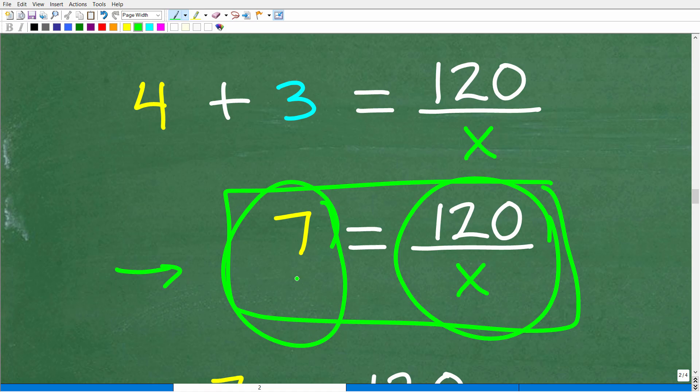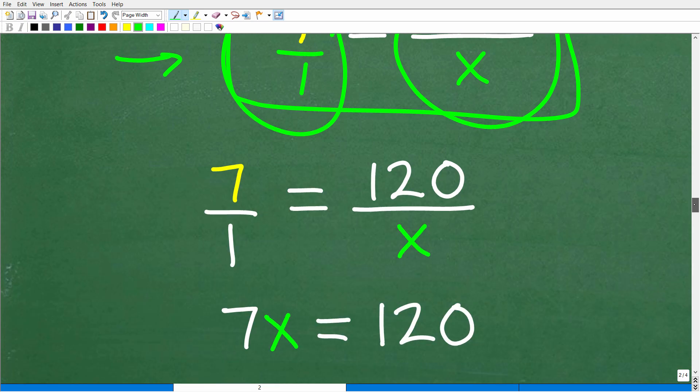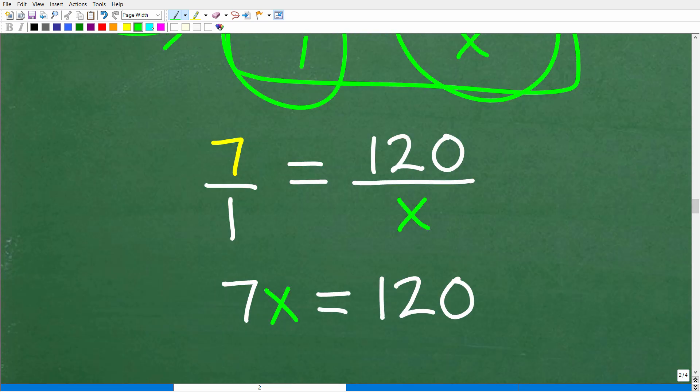Because when you have one fraction equaling to one fraction, you have what we call a proportion. And when you have a proportion in algebra or mathematics, you could simply just use the cross product. In other words, you could just cross multiply to clear these fractions. So 7 times x is 7x. 1 times 120 is 120.